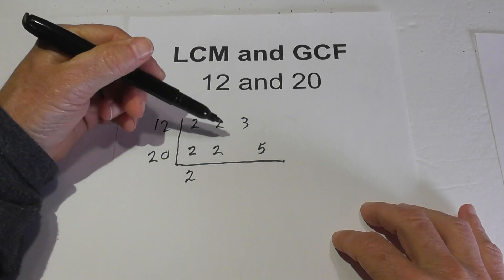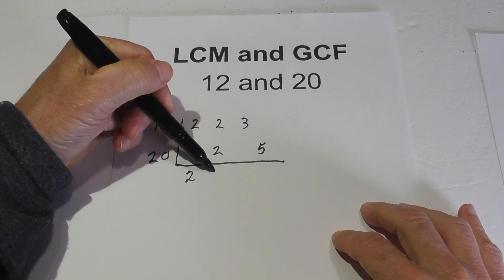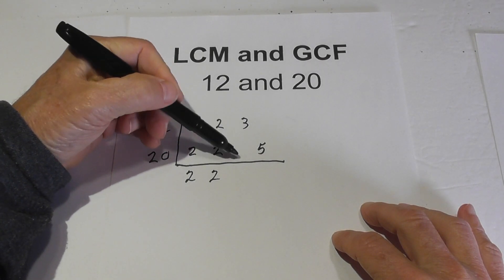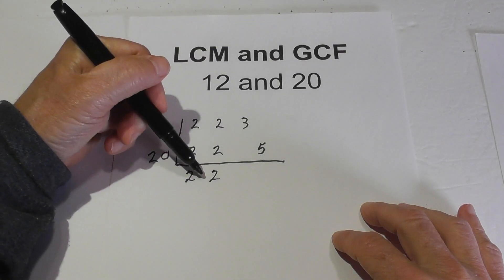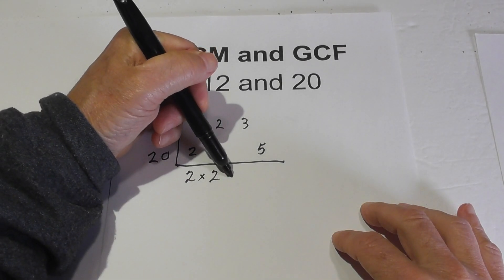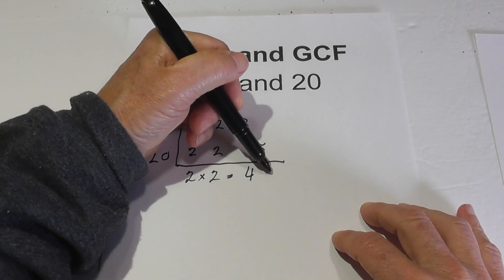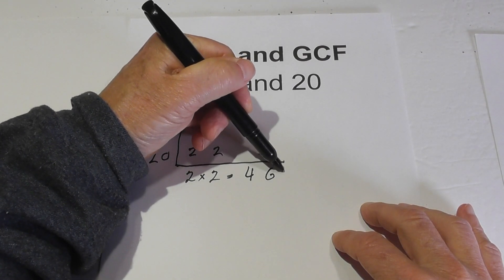So I have a pair of 2s so I'll bring that down. I have a pair of 2s, I'll bring that down. I do not have a pair of 3s so I ignore this, and I do not have a pair of 5s so I ignore that. So now I just multiply these two together. So the greatest common factor is 4.